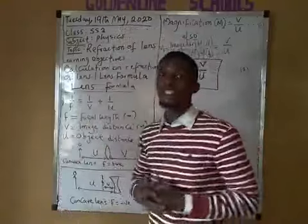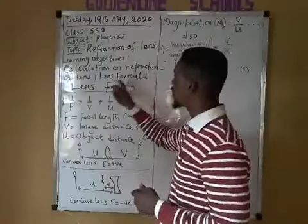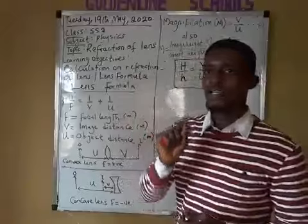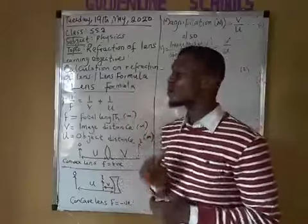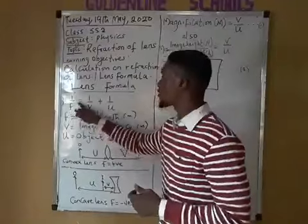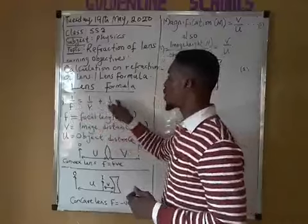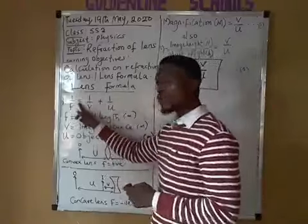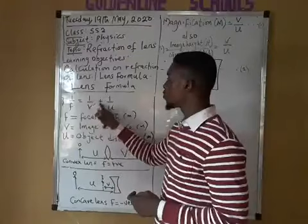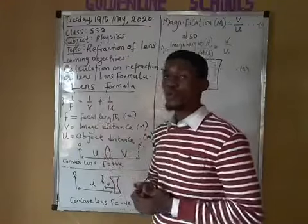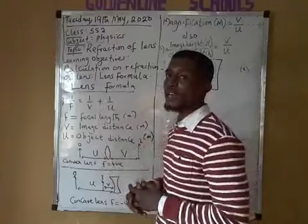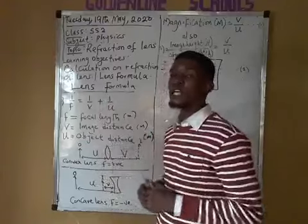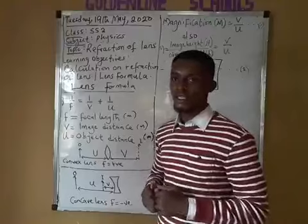Our learning objectives are calculation on refraction of lens, and then we'll be looking at the lens formula. What is the lens formula? The lens formula is 1/F = 1/V + 1/U, where F stands for the focal length, V stands for the image distance, and U stands for the object distance.